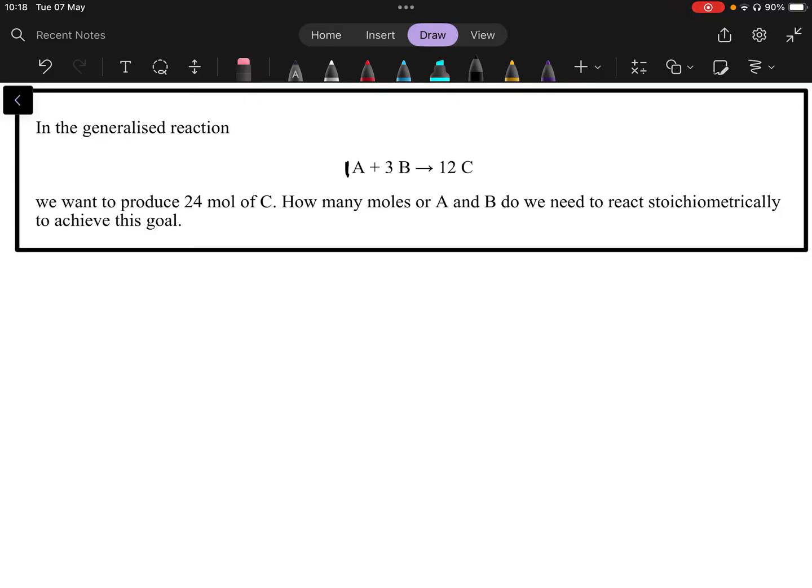And A of course be the least in anything that you calculate except maybe for the mass because the mass differs, but in terms of moles it should be less. Then we're told we want to produce 24 mol of C. How many moles of A and B do we need to react stoichiometrically to achieve this goal? So it should just be an odd, so in other words we need to use the mole ratio of C to determine the number of moles of A and B that needs to react to give us that.